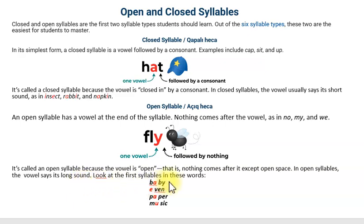Look at the first syllables in these words: baby, even, paper, music. Qapalı hecalarda A, A səsini verir, qısa səslənir. Görürsünüz A, ay. Burada isə açıq hecədə uzun ay səsini verir.